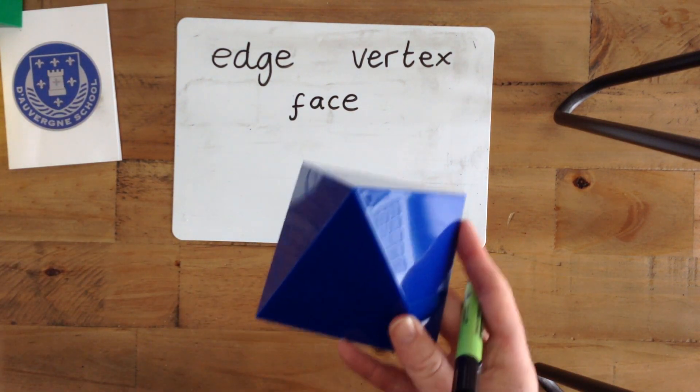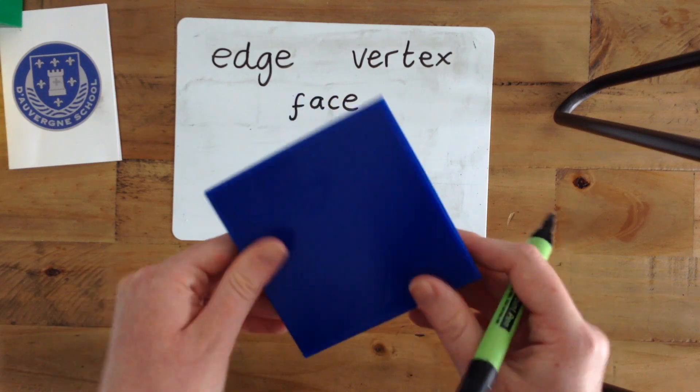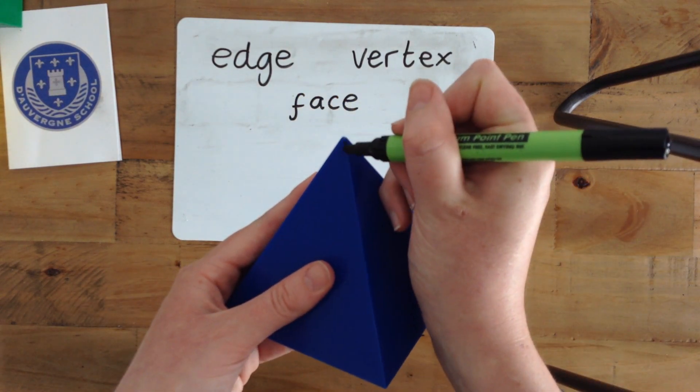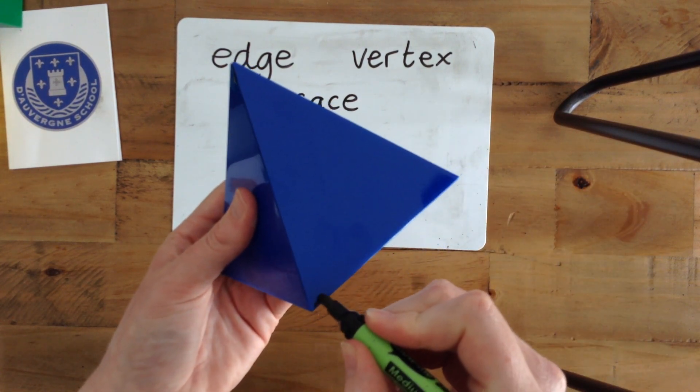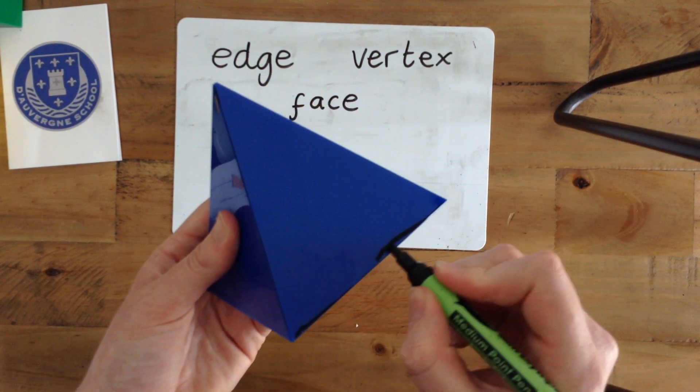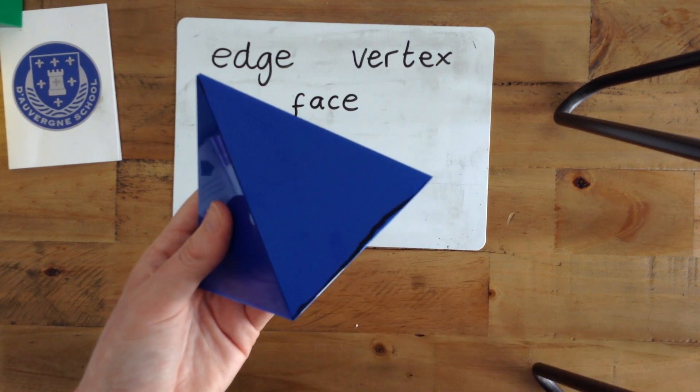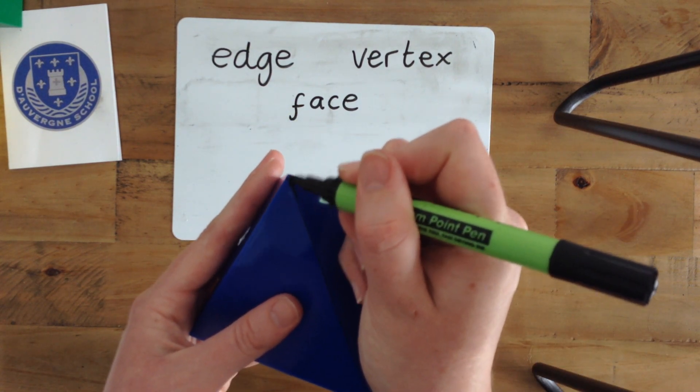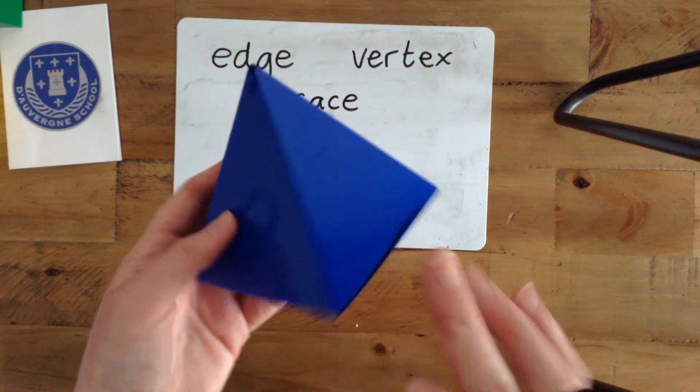Our next shape is a pyramid. I'll show you our edges around here. And we also have our vertices—these bits here. And we have our faces.